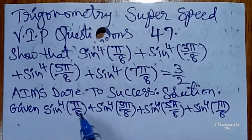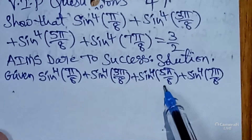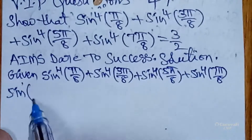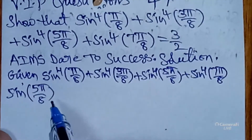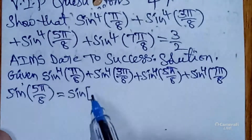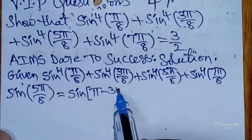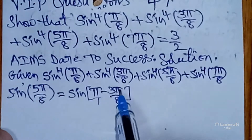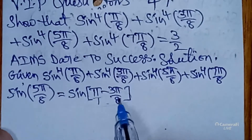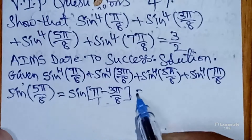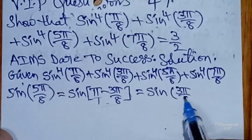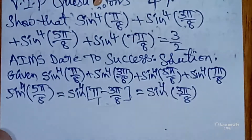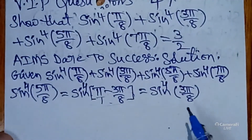According to this question, we have two bigger values: sin⁴(5π/8) and sin⁴(7π/8). I want to simplify them individually. sin(5π/8) can be written as sin(π − 3π/8). The LCM is 8, so 8π/8 − 3π/8 gives 5π/8. This is in the form of sin(180° − θ) = sin θ, where θ = 3π/8. So sin⁴(5π/8) = sin⁴(3π/8).